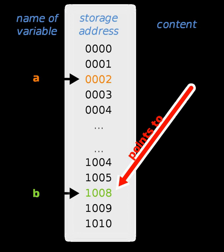An array can be declared and used in the following manner. This allocates a block of five integers and names the block array, which acts as a pointer to the block. Another common use of pointers is to point to dynamically allocated memory from malloc, which returns a consecutive block of memory of no less than the requested size that can be used as an array. While most operators on arrays and pointers are equivalent, the result of the sizeof operator differs. In this example, sizeof(array) will evaluate to 5 * sizeof(int), the size of the array, while sizeof(PTR) will evaluate to sizeof(int*), the size of the pointer itself.